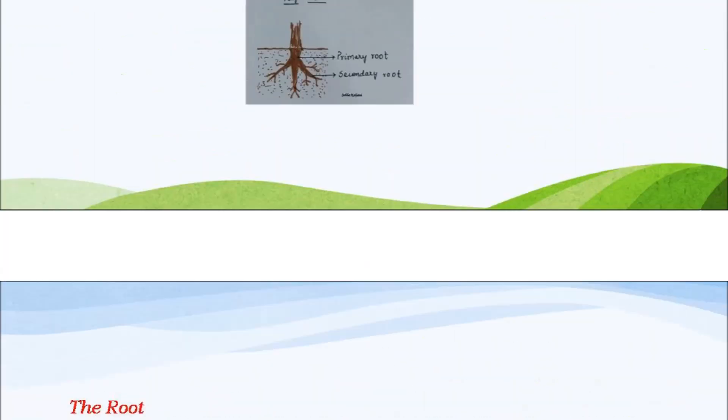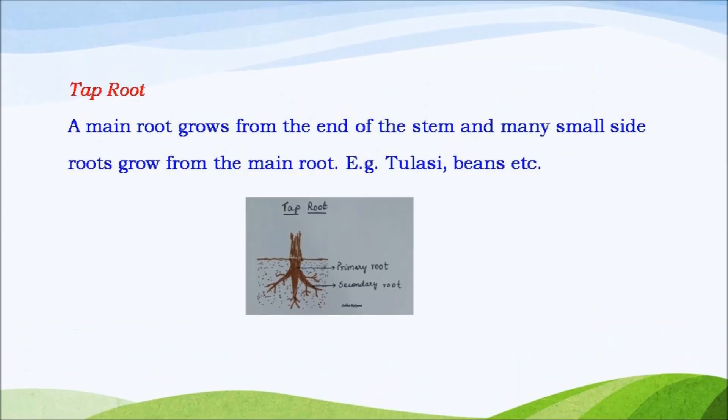Now let us see what is the tap root. In plants like tulsi and beans, a main root grows from the end of the stem and many small side roots grow from the main root. Such a root is called a tap root.